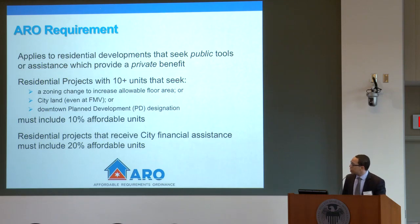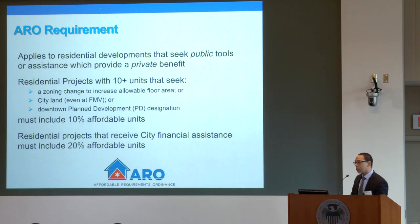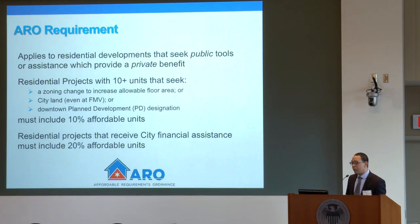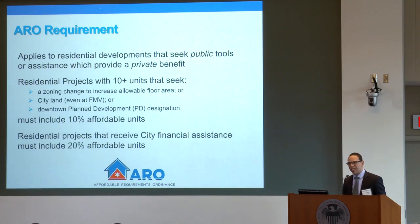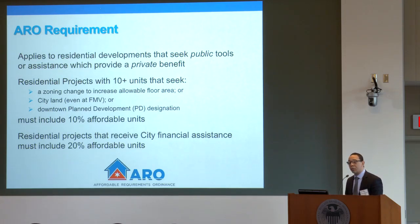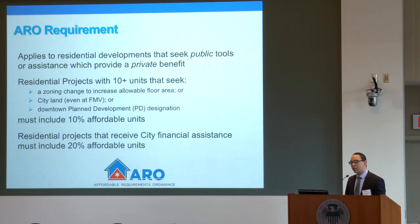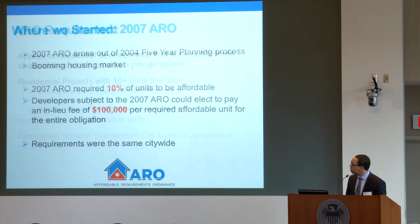To trigger our Affordable Requirements Ordinance, it applies to any residential development that gets some sort of a public benefit — city land, city financial assistance, or most prevalently, a zoning change which allows you to increase your density. It applies to any residential projects of 10 new units or more. It also applies to downtown plan developments, which tend to be much larger projects. If you're getting city financial assistance including TIF, the affordability requirement goes from 10% to 20% of your units.